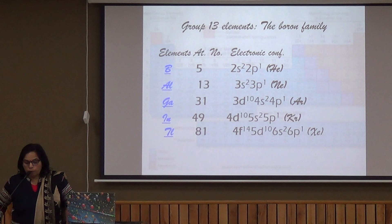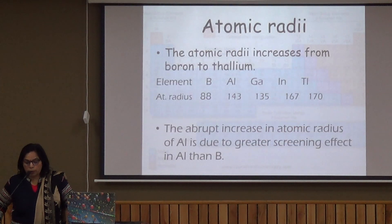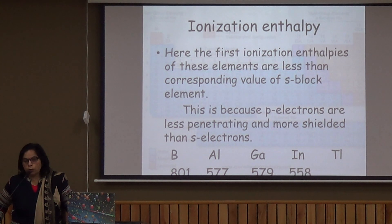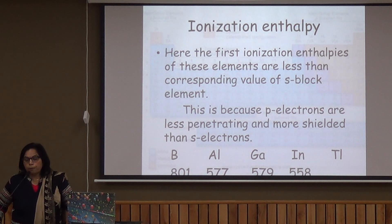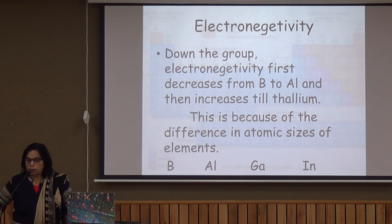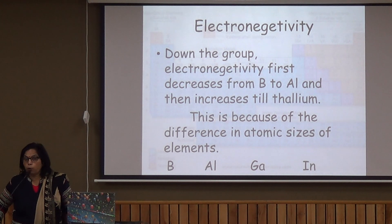The group 13 elements — boron, aluminium, gallium, indium and thallium — are also called the boron family. Atomic size increases from boron to thallium, but the size of gallium is smaller than aluminium due to the poor shielding effect of inner d-orbitals. The first ionization energy of these elements is less than S-block elements because of the low penetration power of P-orbitals. However, due to inner d-orbitals and poor shielding, d-orbitals have diffuse character and show poor shielding with more effective nuclear charge.